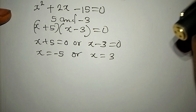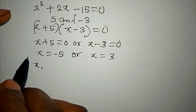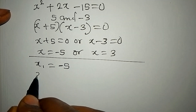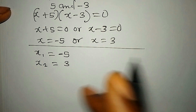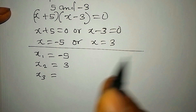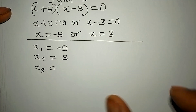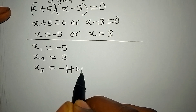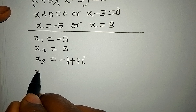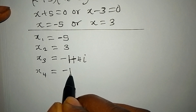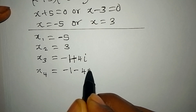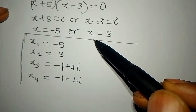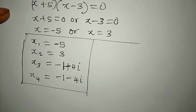Let's bring all four solutions together. x₁ = -5, x₂ = 3, x₃ = -1 + 4i, and x₄ = -1 - 4i. These are the four solutions to the equation. Thank you for watching.